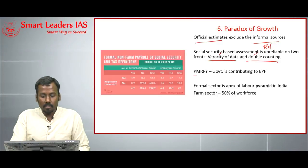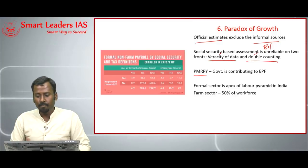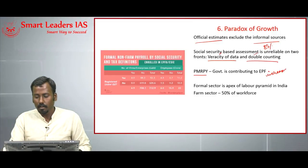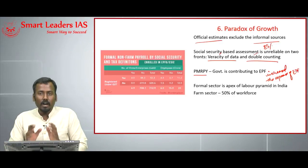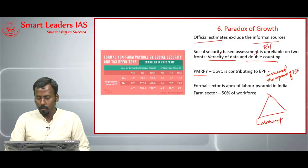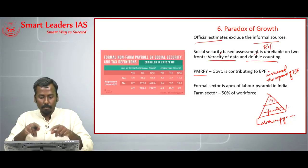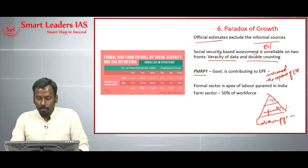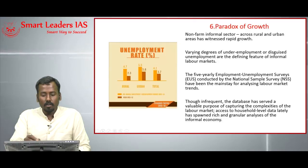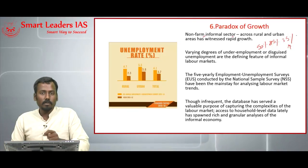Under Pradhan Mantri Rozgar Protsahan Yojana and other state government schemes, the government is contributing the employer's share to EPF, which has artificially inflated EPF enrollment figures. The formal sector represents only the apex of the labor pyramid in India — just 15% of the workforce — while 85% are in the informal sector, of which 50% are from the agriculture sector. The non-farm informal sector comprises 35% and has been growing in the past decade.